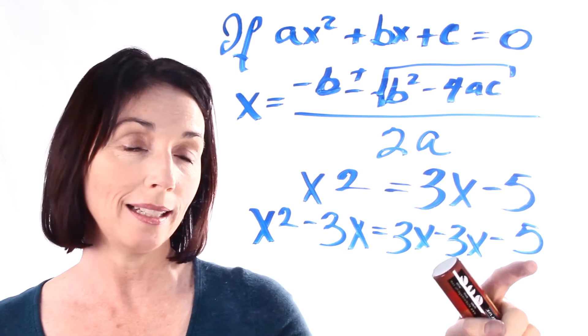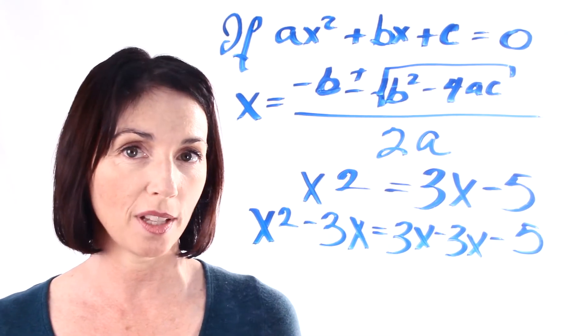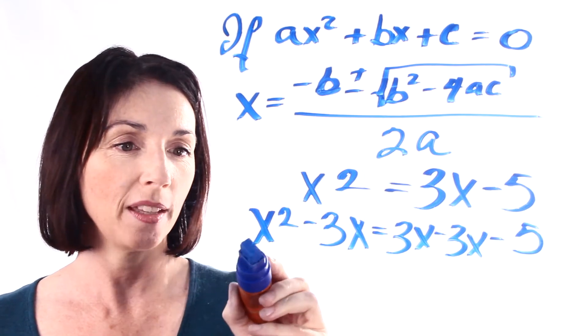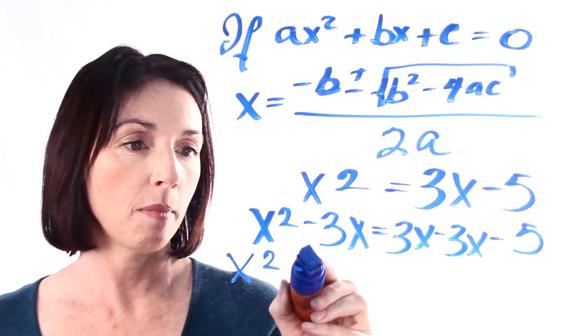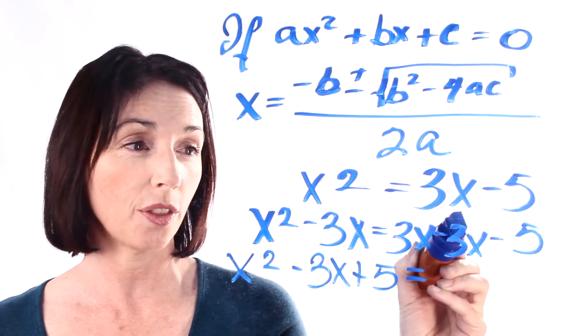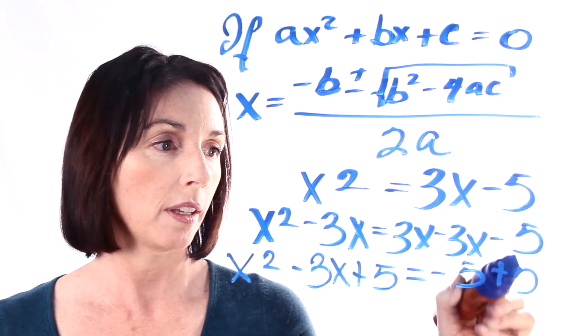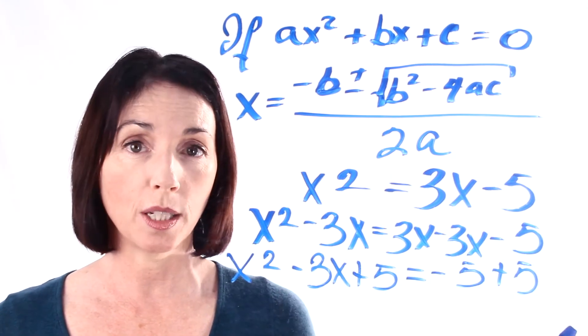So now what we need to do is we need to get this 5 over to this side, and we can do that by adding 5 to both sides of the equation. So the 3x and the 3x just went away. Minus 5 plus 5, and minus 5 plus 5 is equal to zero.